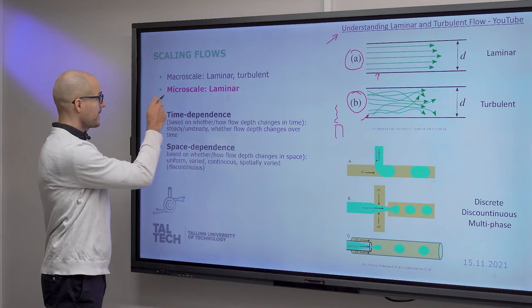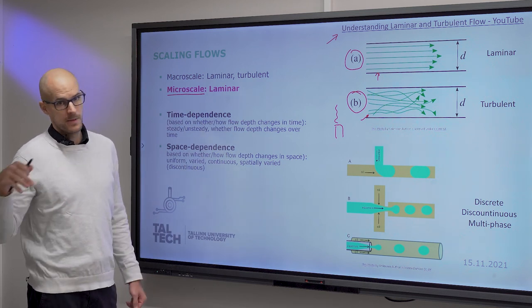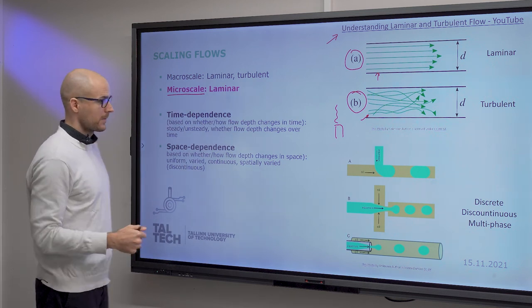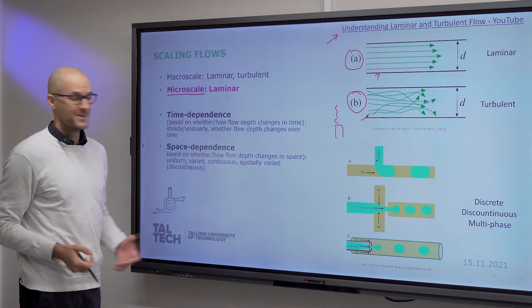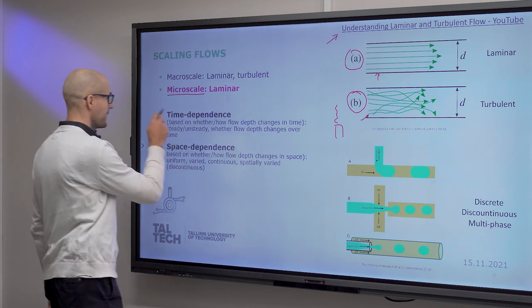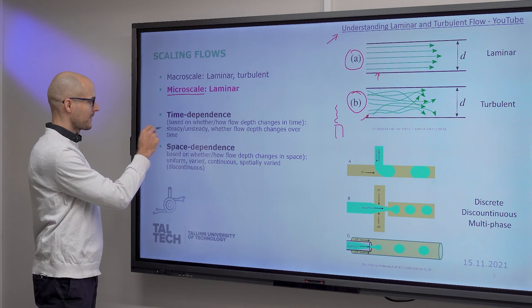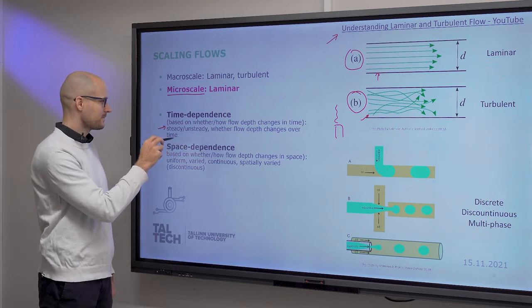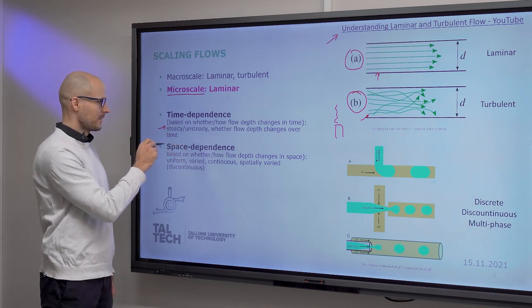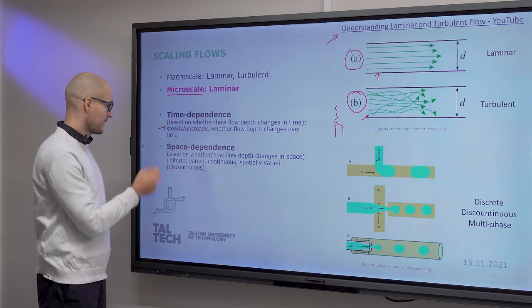Now, in the microscale, flows can only be laminar and the reason for that will come in another lecture. So check out Fluid Mechanics 2 as well. Now, flows can be time and space dependent. Time dependence would mean that the flow depth changes in time. And we can have steady or unsteady flows, whether the flow depth changes over time.